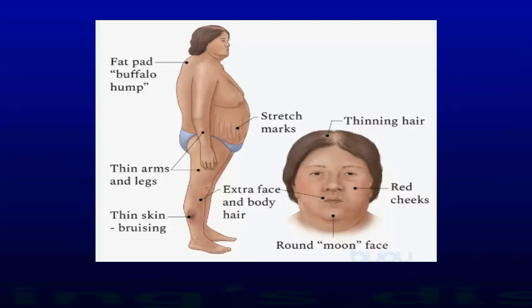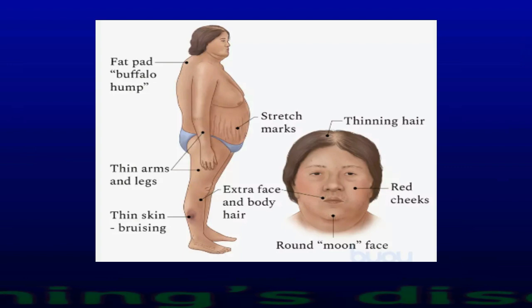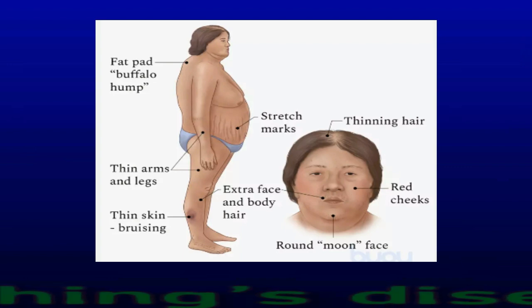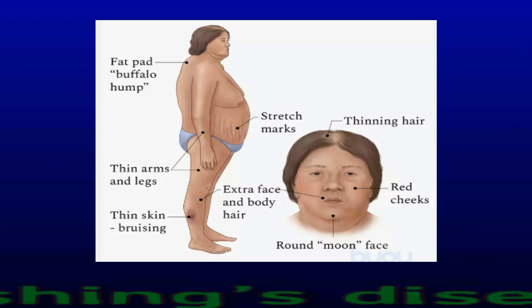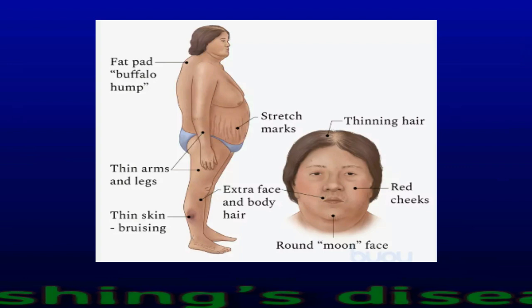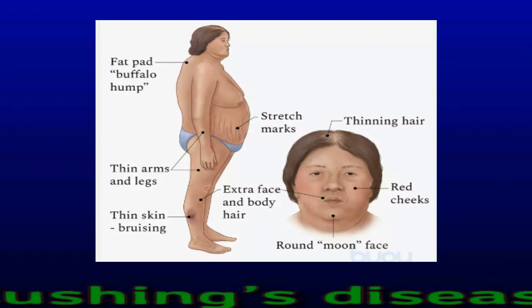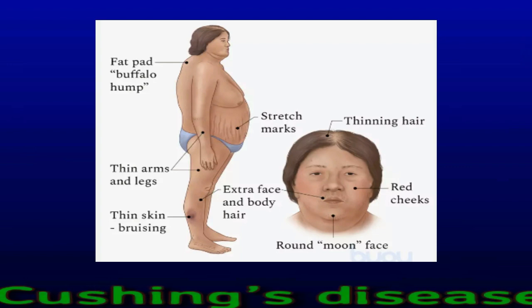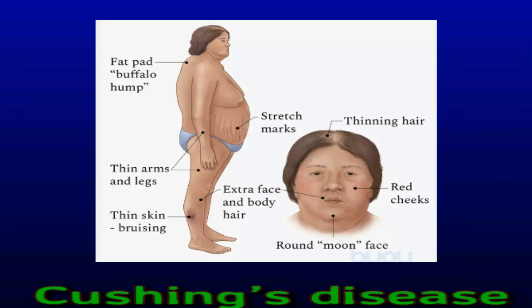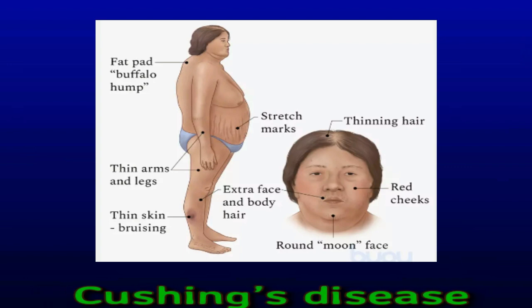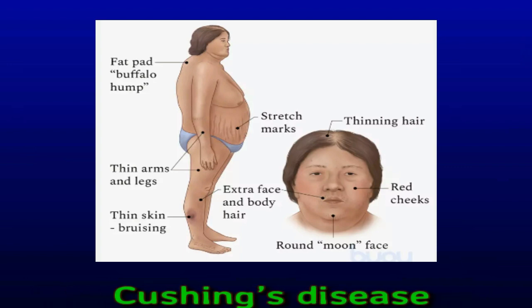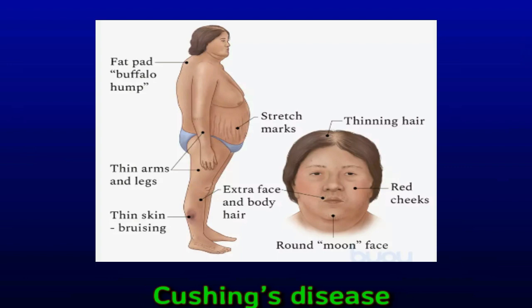Cushing's Disease, sometimes called Cushing's Syndrome, occurs due to the pituitary gland stimulating the adrenal gland to produce too much cortisol over time. Cortisol is a hormone that the body uses to respond to stress. Cushing's Disease typically affects adults ages 30 to 50 years old, though it can occur in children. It is more common in females.